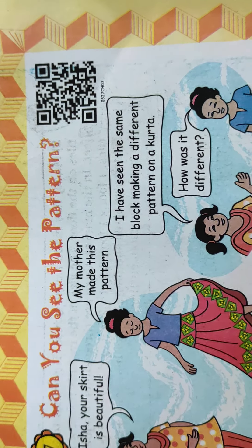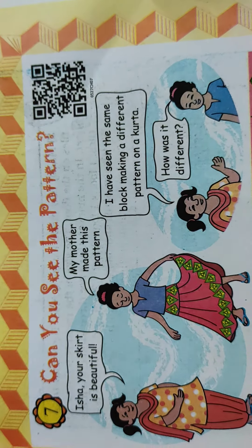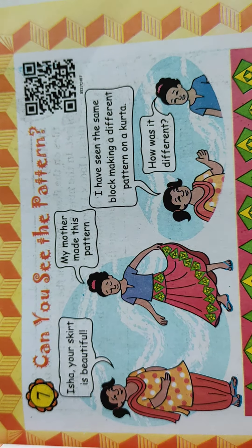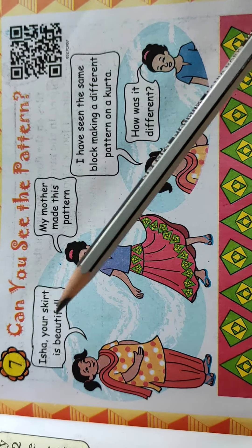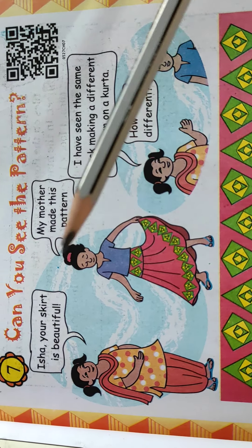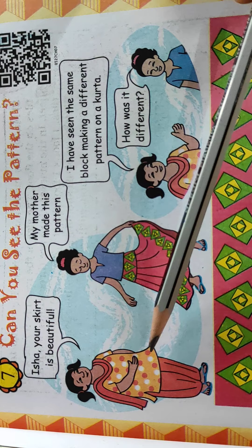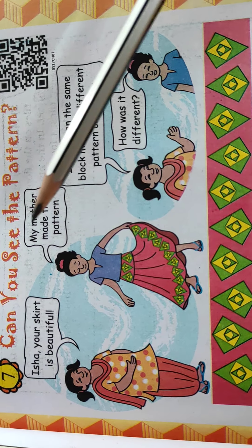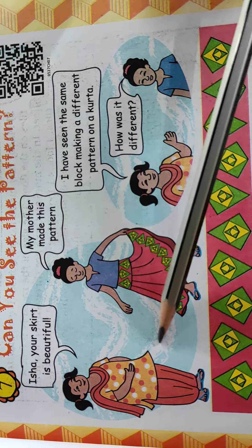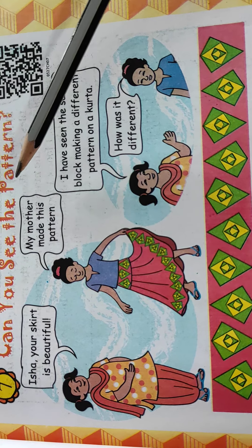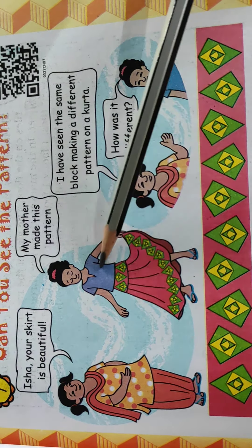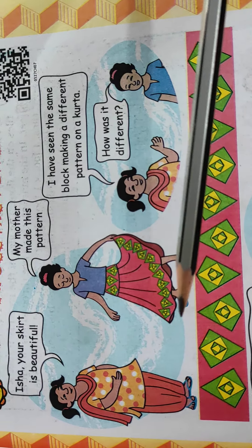Now 50 standard students, let us start chapter number 7 according to your syllabus. Can you see the pattern? Now see, Isha, your skirt is beautiful. That girl is telling to this girl. My mother made this pattern, the girl is saying. So you can see the pattern.